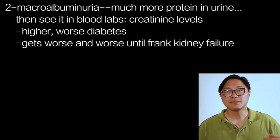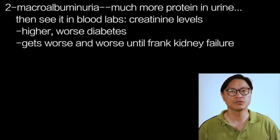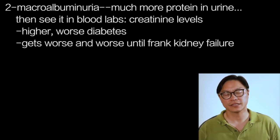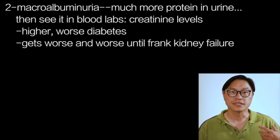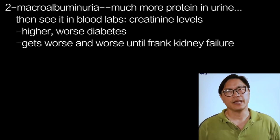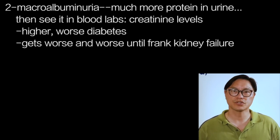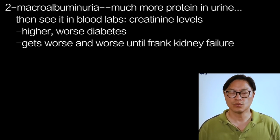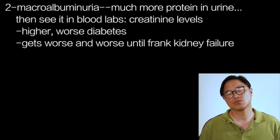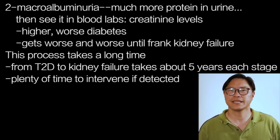After that, you start to see more and more protein in the urine. This is a stage called macroalbuminuria or frank proteinuria, and this is protein that's at such a high level that it's detectable by dipstick. After that, you start to see it in the blood work, where you see an increase in a blood test called creatinine, and that measures how well your kidneys are working. The higher it is, the worse your kidney disease, and it typically gets worse and worse over time with diabetes until you progress to frank kidney failure.